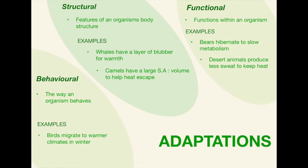Moving on to structural adaptations — these are features of an organism's body structure. Examples include: whales have a layer of blubber for warmth, and camels have a larger surface area to volume ratio to help heat escape. The more examples you have, the better. Finally, functional adaptations are the functions that happen within an organism to help them. Bears hibernate to slow their metabolism in the winter, and desert animals produce less sweat to keep the heat in.